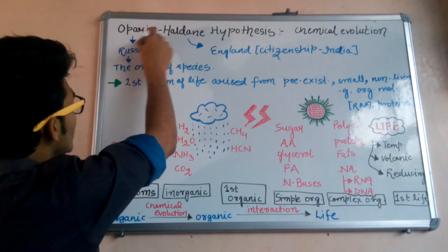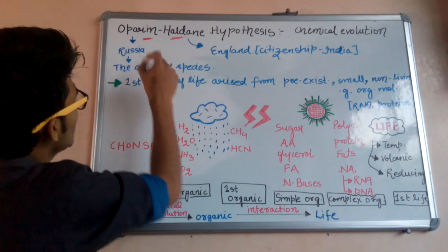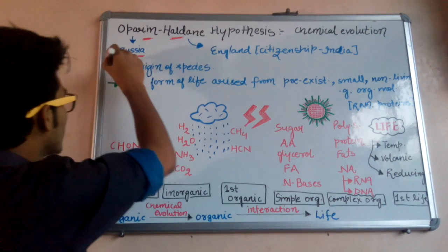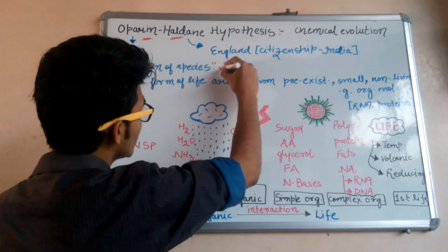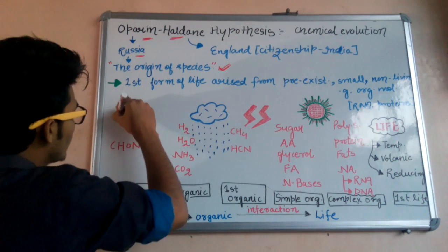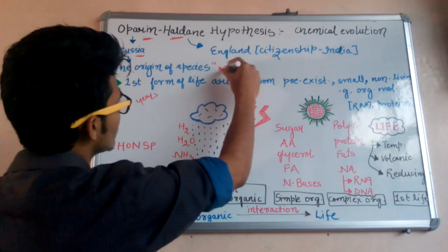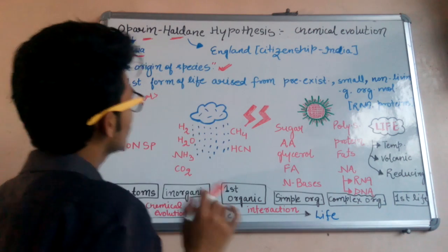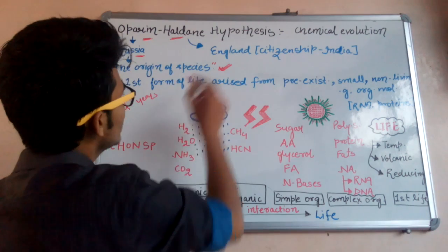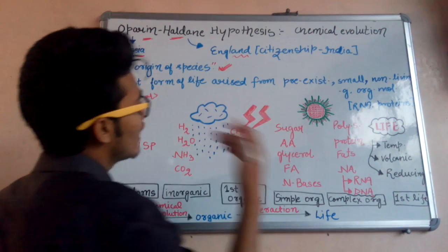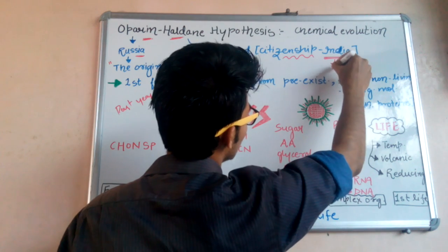Chemical evolution was given by two scientists: Oparin and Haldane. Oparin is from Russia and he wrote a book called 'The Origin of Life' — this is a very important question because in past exam years it has been asked. Haldane is a scientist from England.